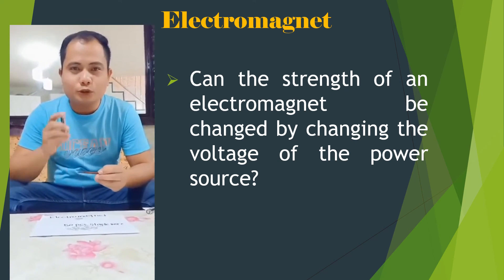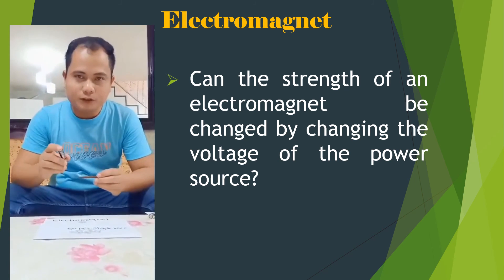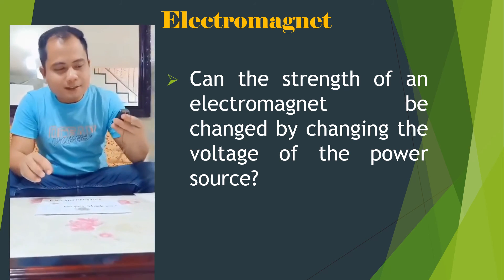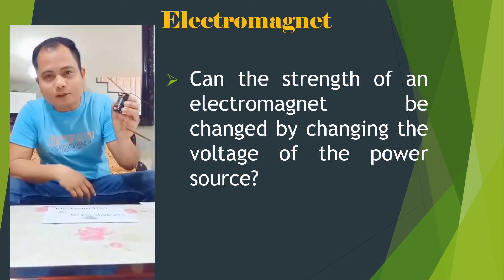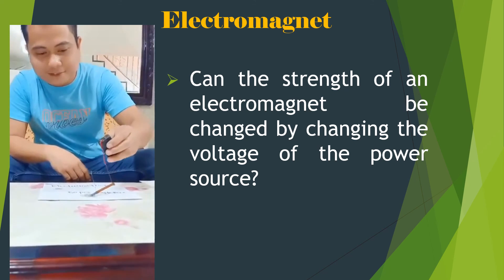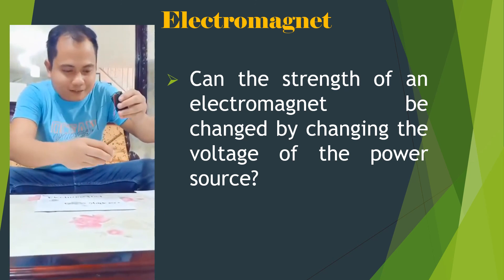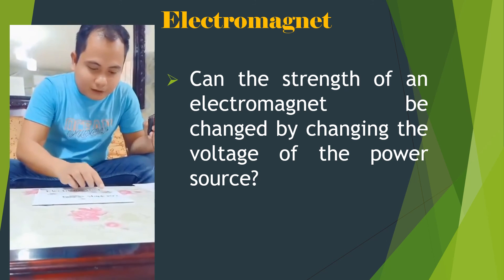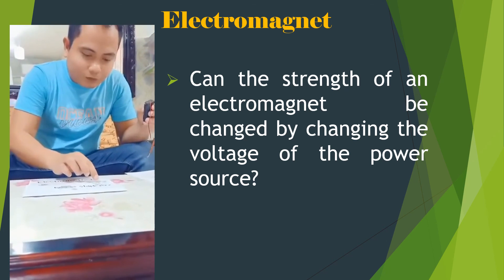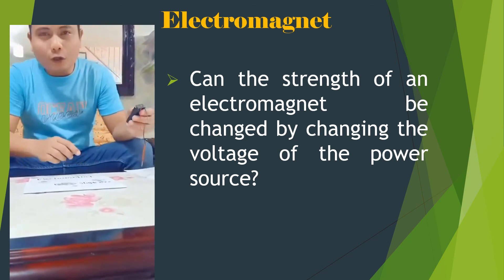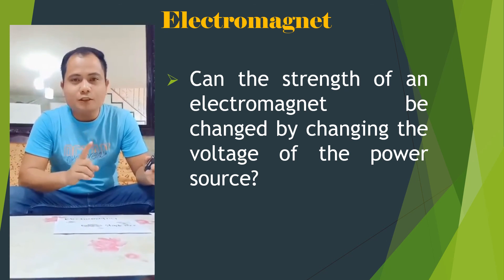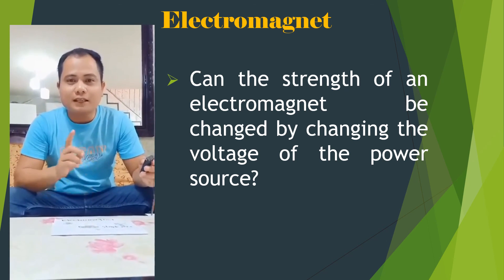What about using two batteries at 3 volts? A while ago, 1.5 volts attracted 9 staple wires. Now with 3 volts, counting: 1, 2, 3, 4, 5, 6, 7, 8, 9, 10, 11, 12, 13, 14 staple wires. Meaning, adding voltage increases the strength of the electromagnet.